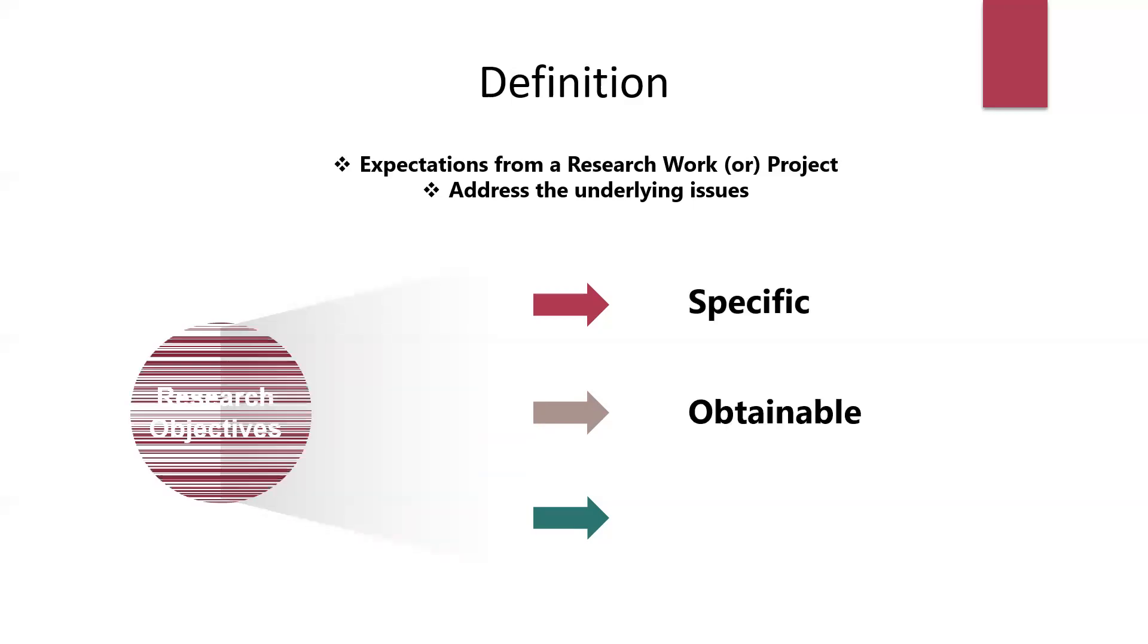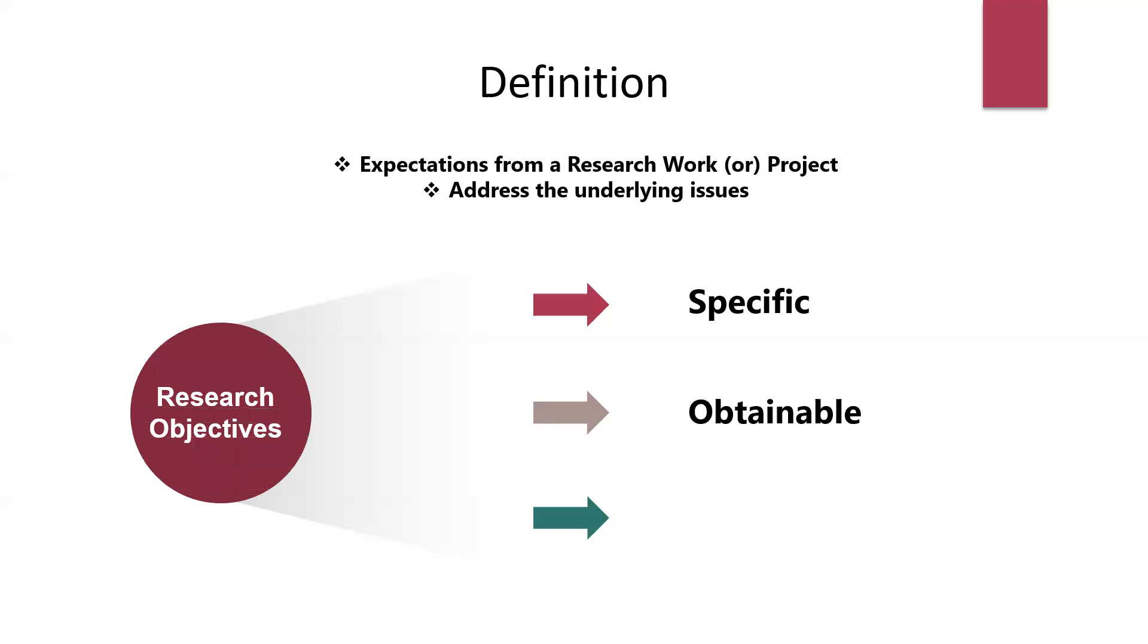The next point is obtainable, or in other terms, achievable. Whenever you start a research work, research objectives must be written by keeping in mind whether they are achievable or obtainable by means of any tools—whether theoretical or experimental research work. We have to think: is it possible to get the outcome or not? Some research works go on without considering timelines, but a research work must have a time bound, otherwise it will be like an infinite ocean.